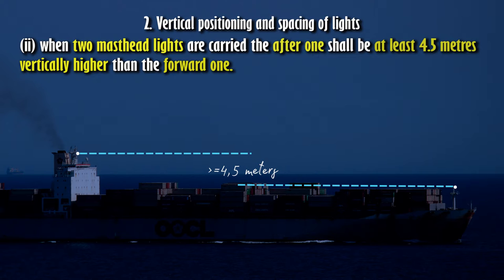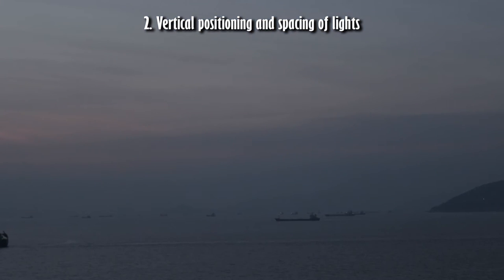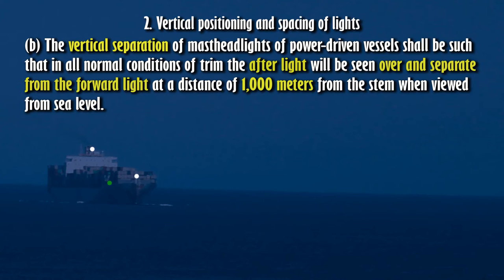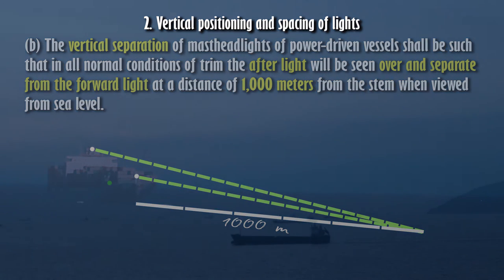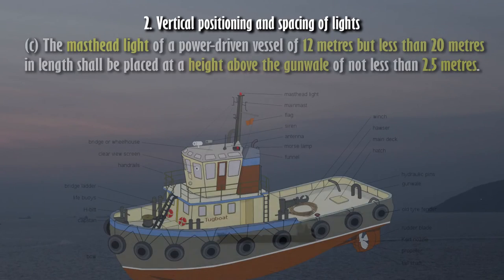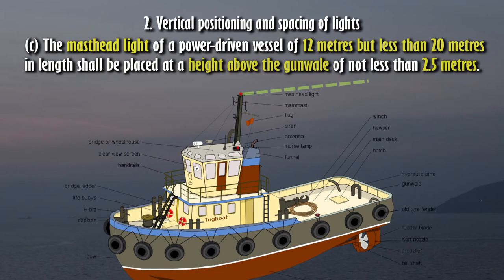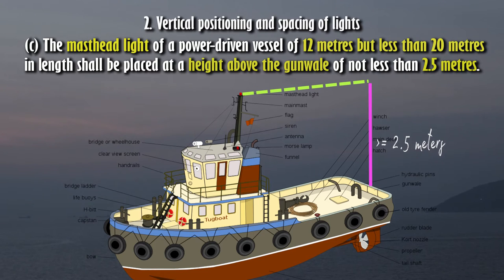(3) The vertical separation of masthead lights of power-driven vessels shall be such that in all normal conditions of trim the after light will be seen over and separate from the forward light at a distance of 1000 meters from the stem when viewed from sea level. (4) The masthead light of a power-driven vessel of 12 meters but less than 20 meters in length shall be placed at a height above the gunwale of not less than 2.5 meters.